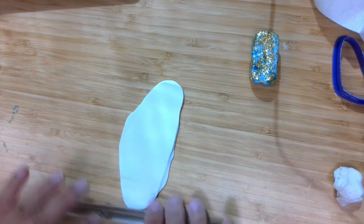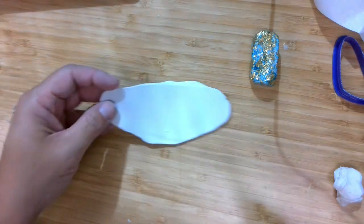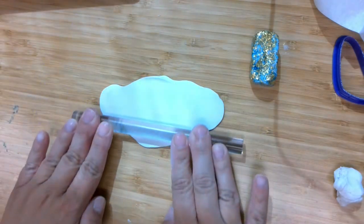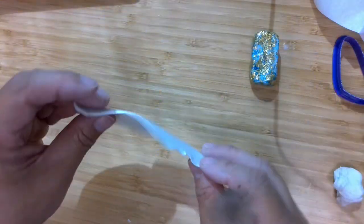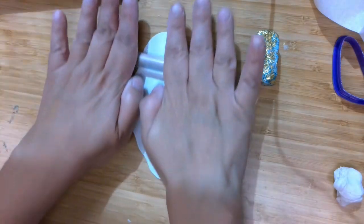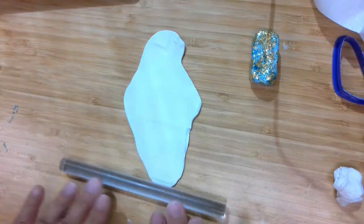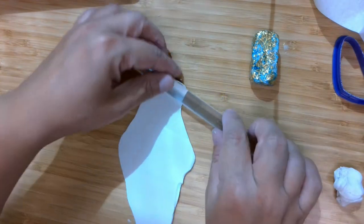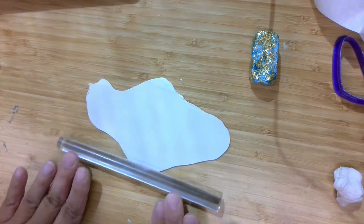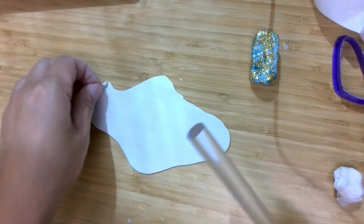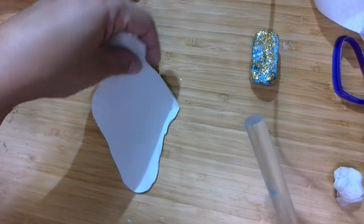It just needs to be thick enough to serve as the back of the pendant. So this is rolled out pretty thin. And it doesn't have to be any specific shape either. Okay, so we've got our white.